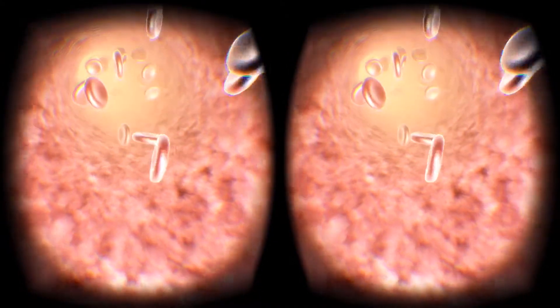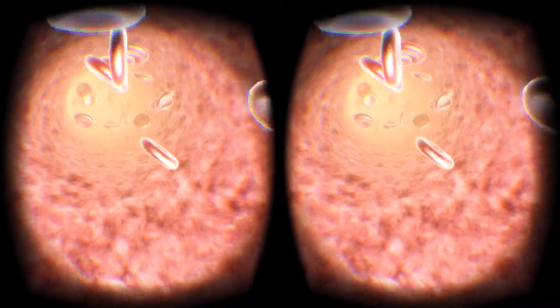Red blood cells take up oxygen in the lungs and release it into tissues while travelling through the body's capillaries.